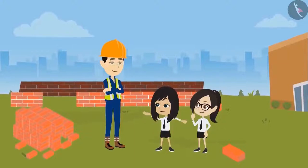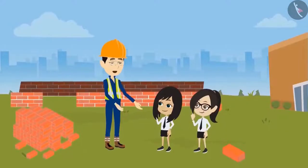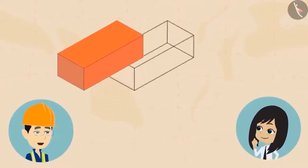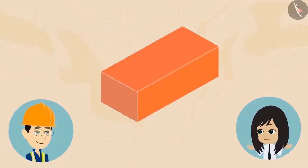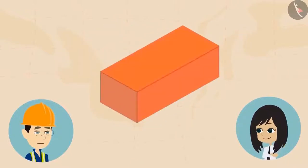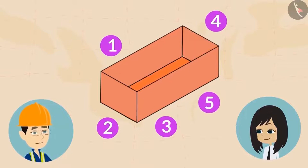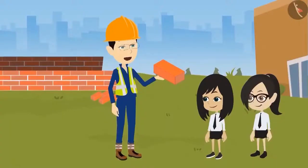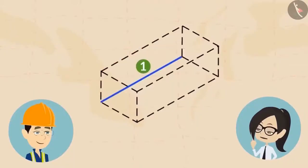Now we have understood. But here all the bricks are of the same shape. Are all bricks of the same rectangular shape? Yes — all bricks are of this shape, a rectangular box. In mathematics, this shape is called a cuboid. This brick has so many faces — can we count them? Yes. Every brick has six faces: one, two, three, four, five and six. Now, can you count the edges of this brick? It has twelve edges: one through twelve.